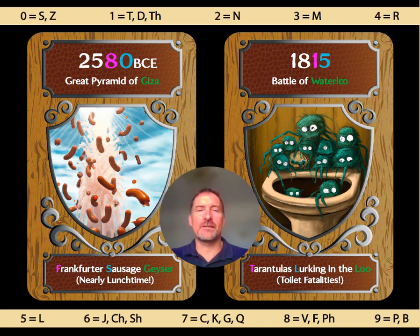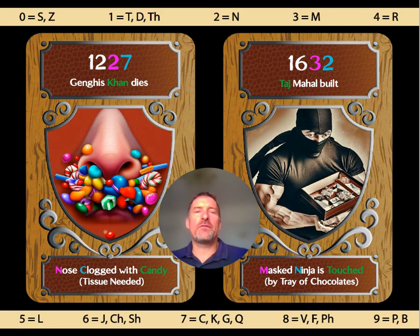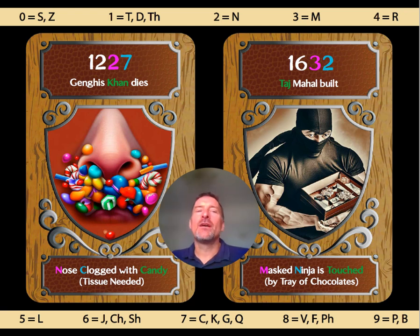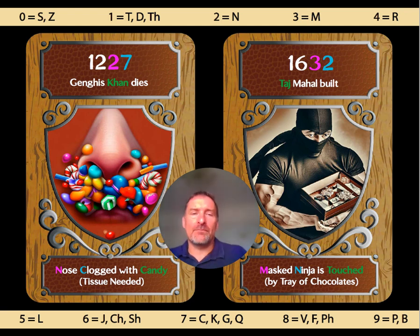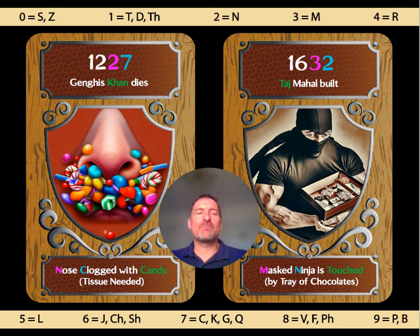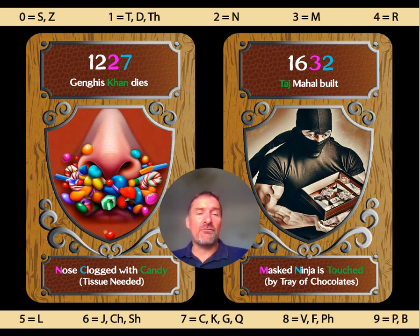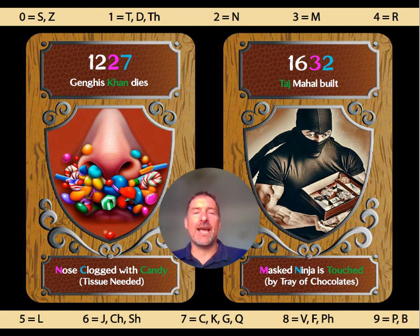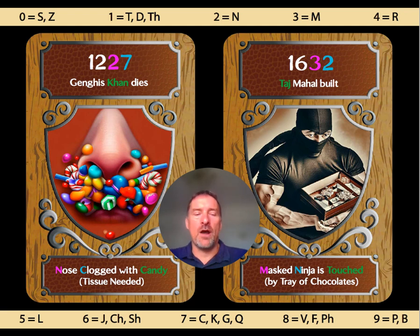Here are the next two events. The death of the great Mongolian leader Genghis Khan in 1227 — encoded as 'nose clogged with candy tissue needed great image.' N equals 2 and C equals 7, because the letter K looks like two sevens joined together, and C has the same sound as K. And the date the Taj Mahal was built, 1632, given as 'masked ninja is touched by a tray of chocolates.' M is 3 and N is 2, giving 1632; the 1 and 6 are encoded in T and CH from 'tray of chocolates.' Pause the video to work through that if you like.